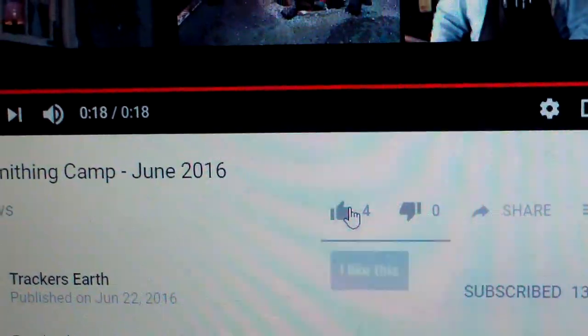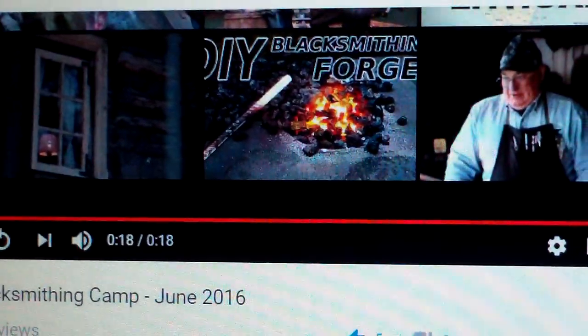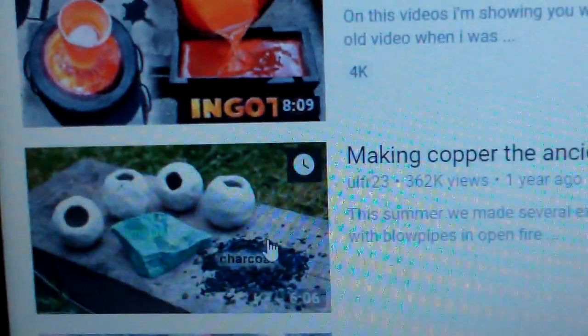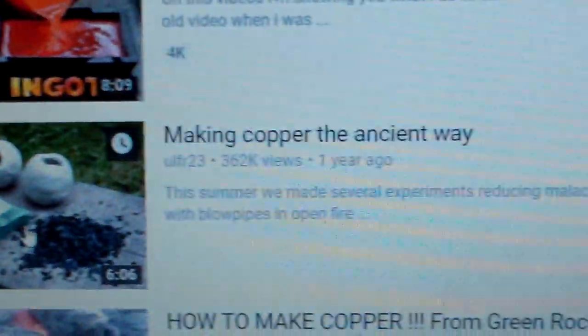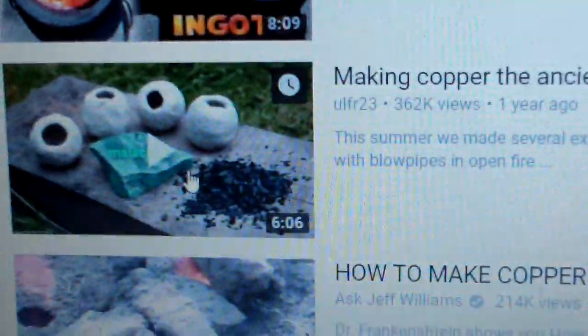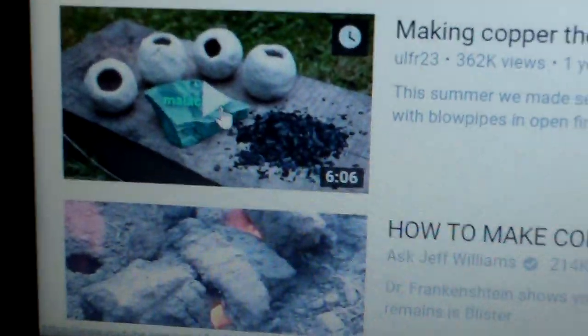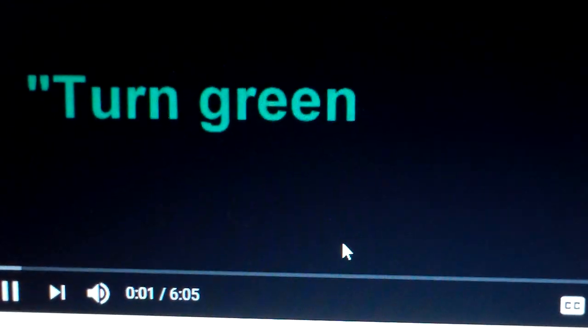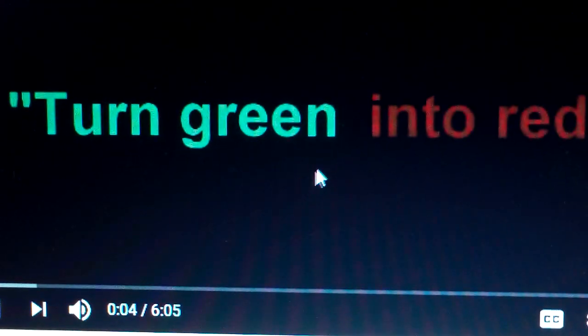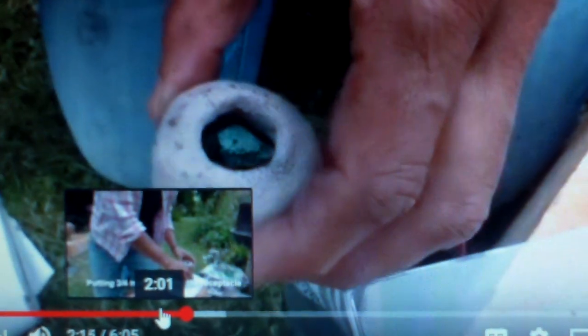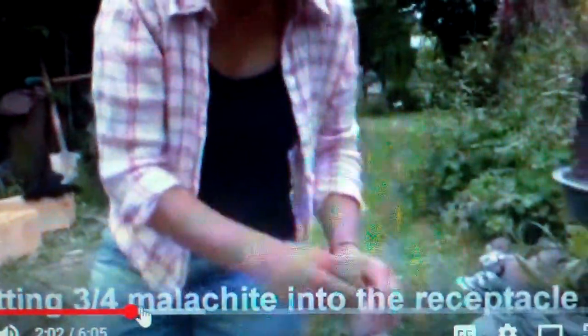There's this thing called Making Copper the Ancient Way. I'm going to put links to all these videos in the description of this video. These people take malachite, which is oxidized copper, it's a green jewel, and they crush it and turn it into powder.